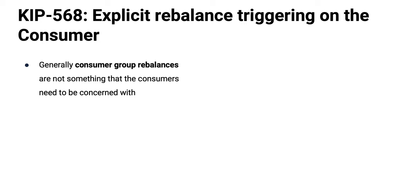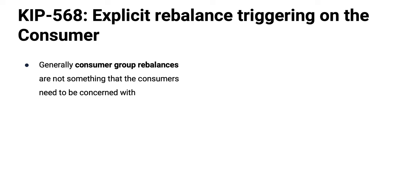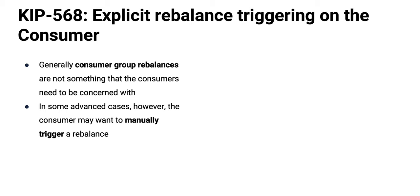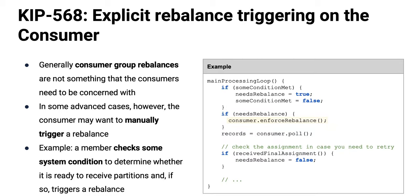KIP-568 gives us an API for triggering consumer group rebalance. Normally, if you're a consumer, you're always part of a group, whether a group of one or many. You kind of want a hands-off attitude to consumer group rebalance — it's driven by the client library and you don't touch it a lot from an API standpoint. But sometimes you have to. Abstractions always leak. Now with this KIP, you've got a way to reach down and trigger a rebalance yourself using the method called enforceRebalance. If there's some condition in the system you detect that tells you a rebalance is needed, now you have an API for that.